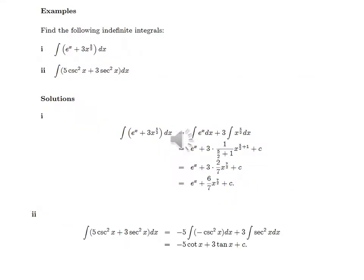Exam example: Find the following indefinite integral — the integral of (e^x plus 3x to the power three-halves) dx. Solution: The integral of e^x dx plus 3 times the integral of x to the power three-halves dx equals e^x plus 3 divided by (three-halves plus 1) times x to the power (three-halves plus 1), giving the final result of e^x plus six-sevenths x to the power seven-halves plus C.